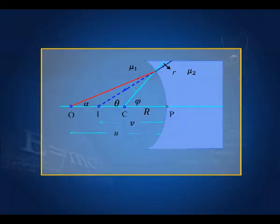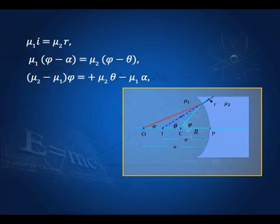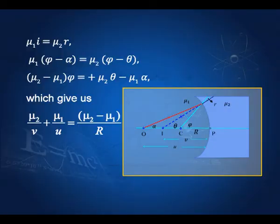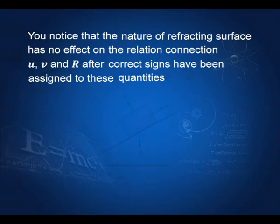For a concave surface we get the same relation. Here μ₁·i equals μ₂·r, i equals φ minus α, and r equals φ minus θ. Rearranging gives μ₂/v minus μ₁/u equals (μ₂ minus μ₁)/r. In this case v, u, and r are all negative, so the signs cancel and the equation is unchanged. The nature of the refracting surface — concave or convex — has no effect on the relation connecting u, v, and r. This result is valid only for paraxial rays making small angles with the principal axis.